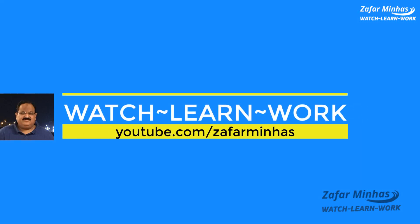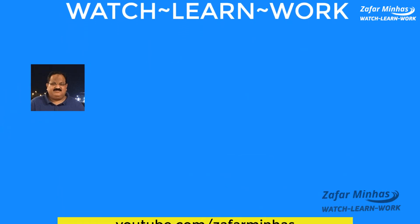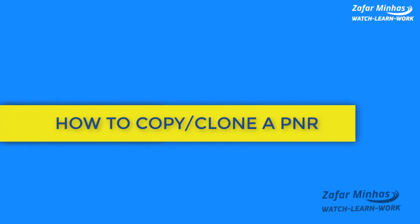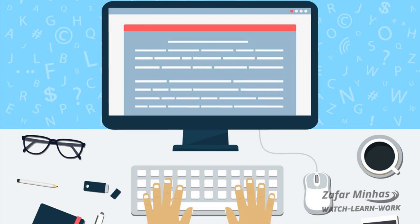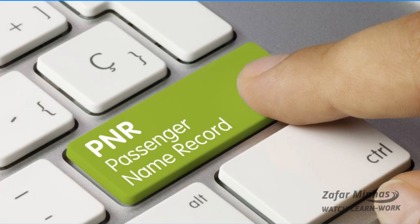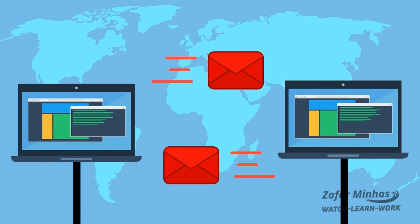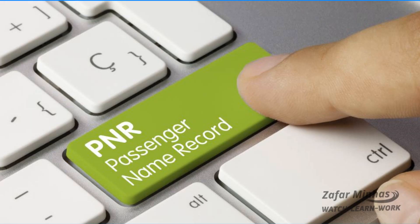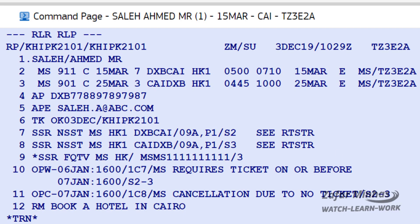Welcome to this tutorial on how to copy or clone a PNR. In order to avoid having to re-enter the same elements over and over into different PNRs, it is possible to copy information from one PNR and use it to create a new PNR through a selection of transactions. For example, to copy all elements except name and ticketing elements from a displayed PNR.